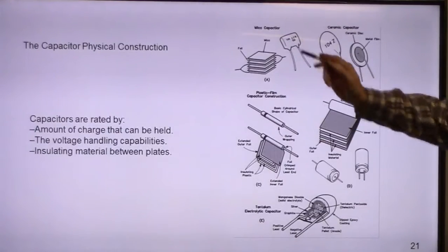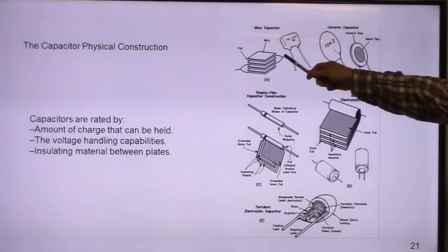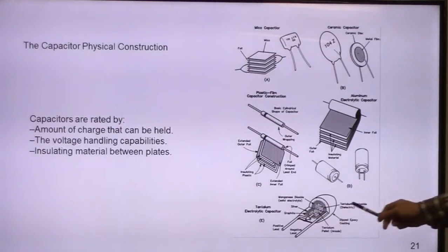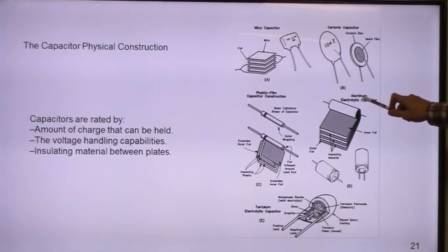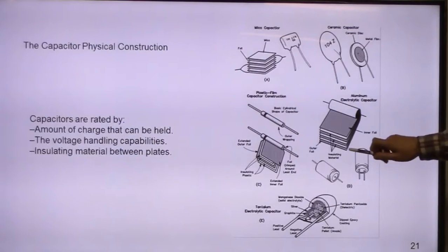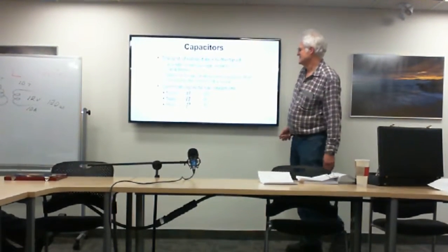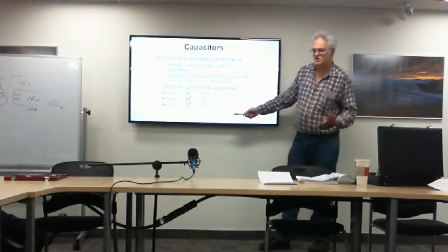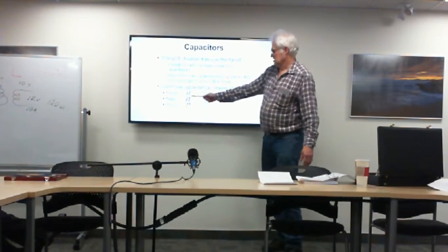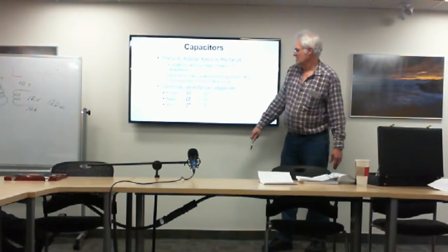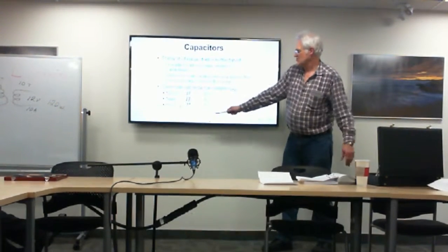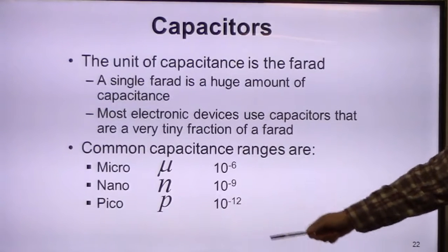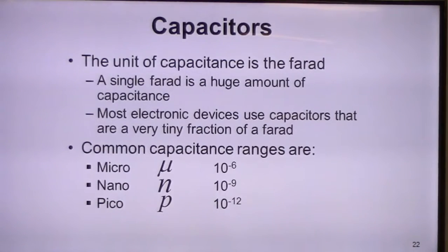Very common capacitor types include ceramic, mica, and tantalum. Electrolytics are a little bit special. The basic unit of capacitance is the farad, and the symbol for a capacitor is C. Typical capacitance ranges: one farad is very large — in electronics and radio you're generally dealing in fractions: microfarads are one-millionth, and picofarads are one-billionth. Those three ranges are very common.